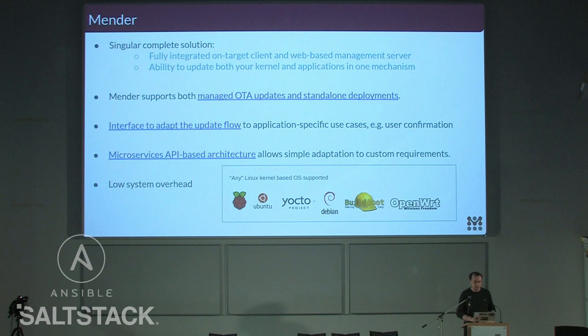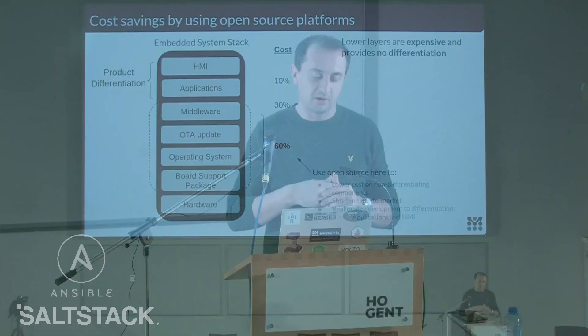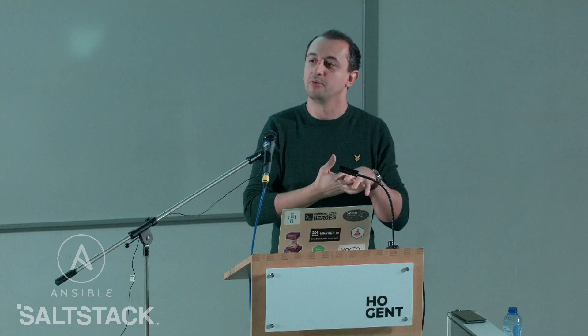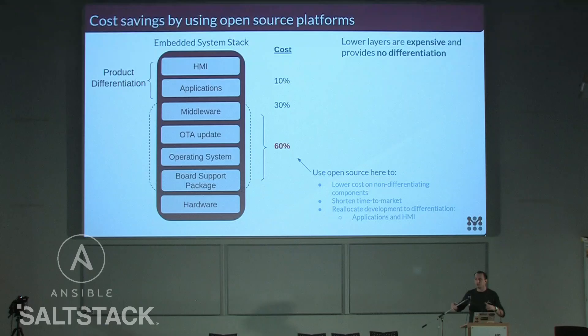This is my last slide. The embedded stack typically looks like this: you have hardware, the board support package comes from the vendor, then the operating system — the Linux kernel and root file system for system binaries. This is where OTA updates fit in at the lower stack. Above that you have middleware, and at the top are the applications and possibly a human interface — which is the product differentiation. Typically you don't want to spend time on these lower components; just reuse them and focus on product differentiation.